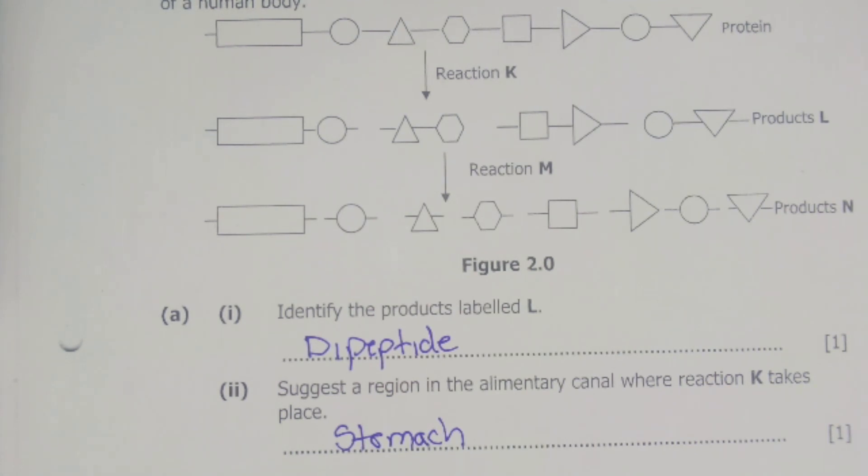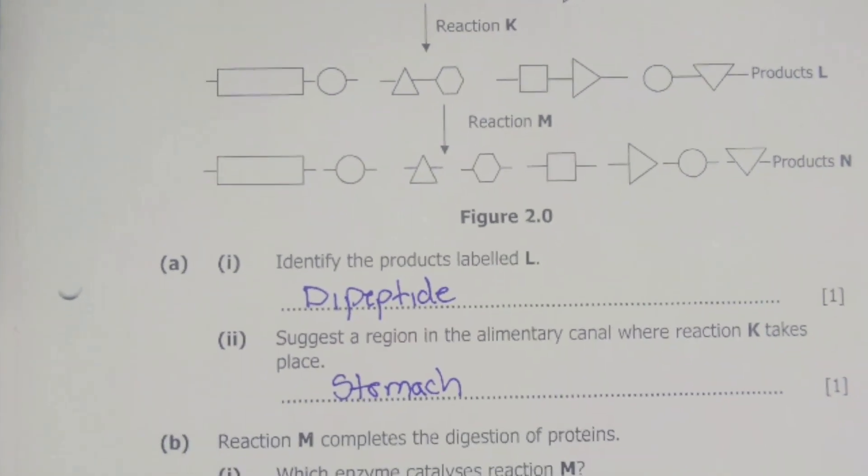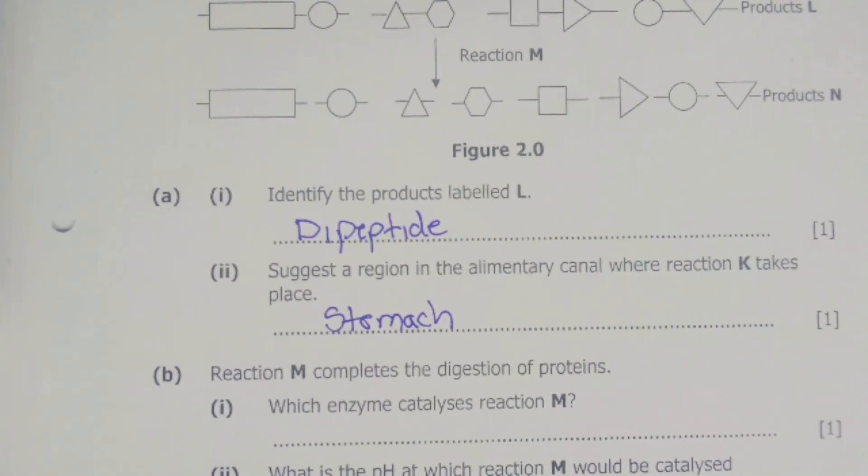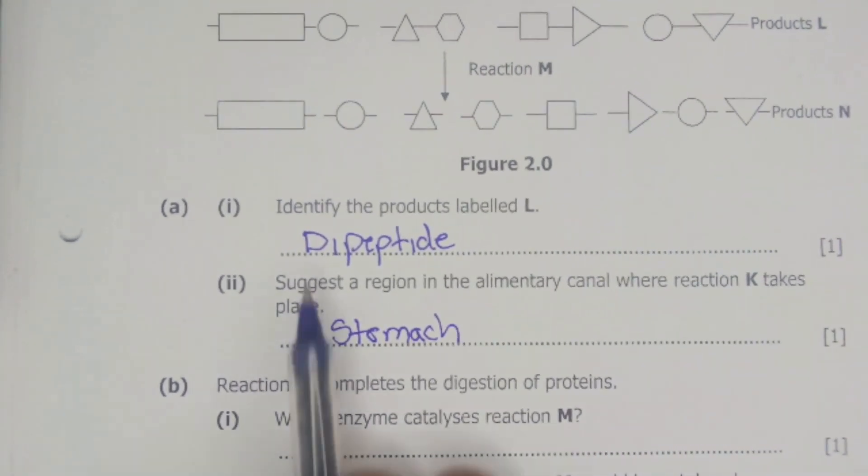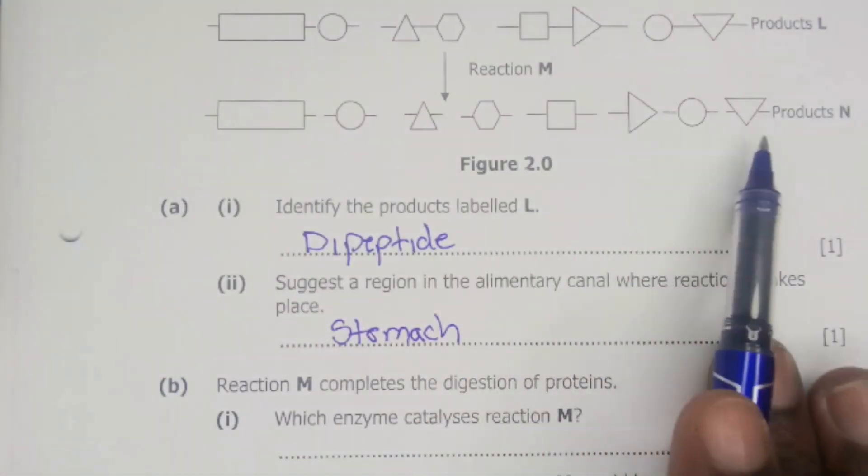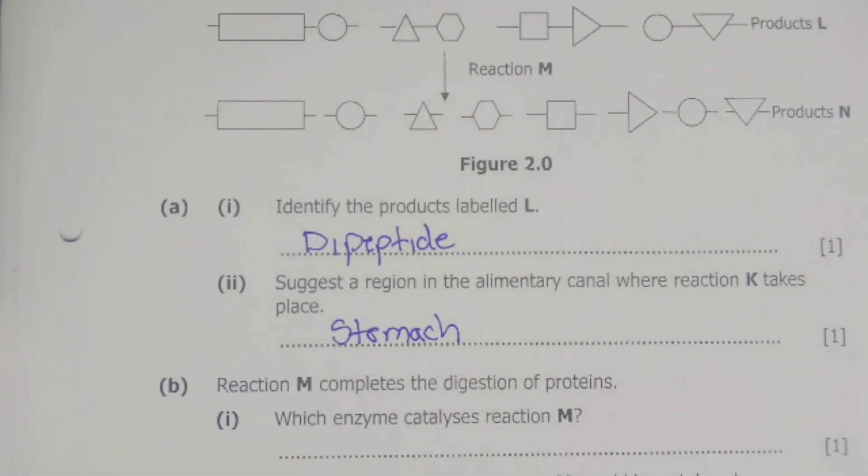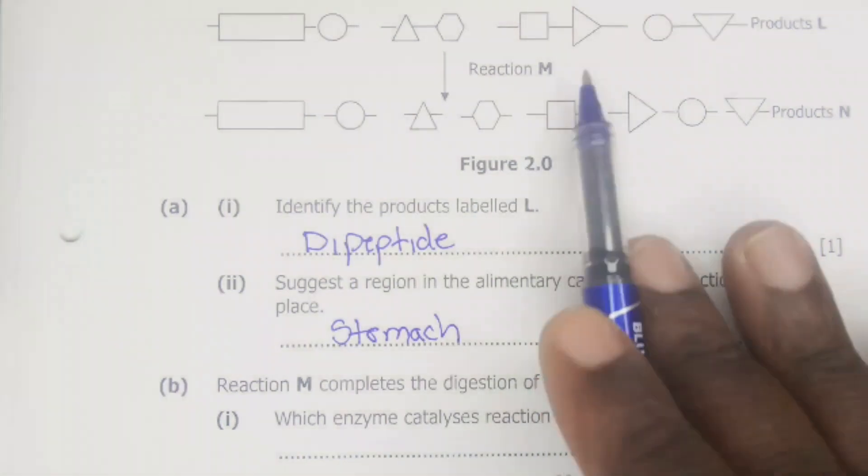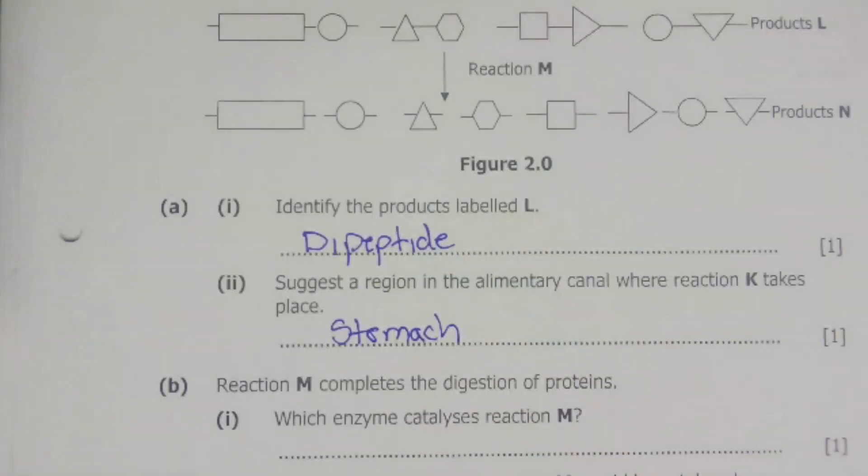The next question is B and B reads reaction M completes the digestion of proteins. We have reaction M here where we are breaking down the dipeptides into the end products of a protein. Here we are asked to say which enzyme catalyzes reaction M. To break down the dipeptides into amino acids, the enzyme which is used is dipeptidase.